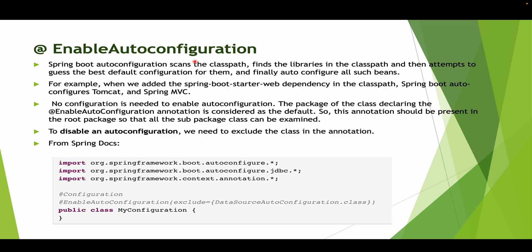What is @EnableAutoConfiguration? Let's try to understand this with an example. We just created a project and added the spring-boot-starter-web dependency. Did we add Tomcat and Spring MVC? No — Spring Boot automatically added that. Why? It is because of the @EnableAutoConfiguration annotation. This annotation scans the class path, finds the libraries in the class path, and then attempts to guess the best default configuration for them and finally auto-configures all such libraries — whether that configuration is required or not, Spring will auto-configure the best suitable configurations.